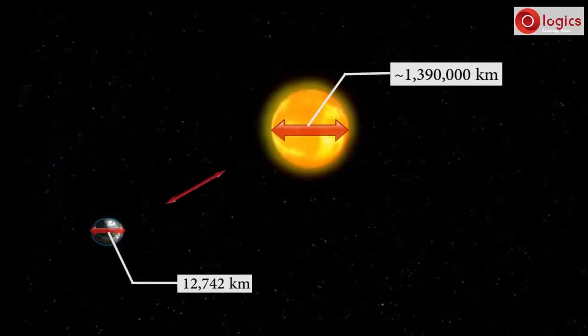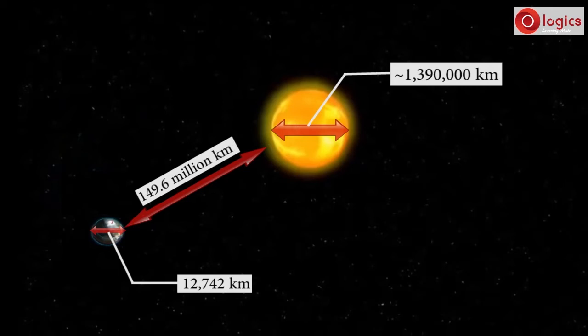The distance between sun and earth is 149.6 million kilometers.